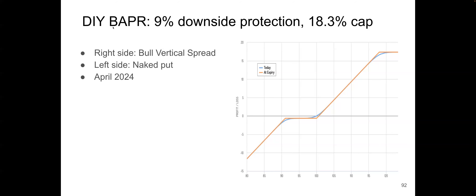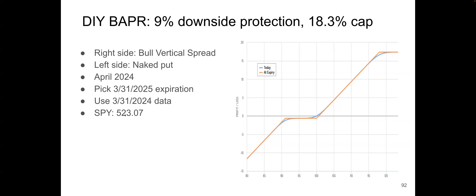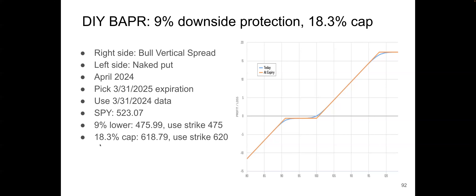This ETF called BAPR means April — so it's April 2024, and it will mature in a year, which is April 2025. Let's try to DIY and see what kind of price we can get. I will pick the closest expiration date, which is end of March, so a year from there is March 31st of this year. On that day, S&P 500 or SPY is $523.07. The 9% lower strike is very close to 475, and the higher strike, which is the cap at 18.3% higher, is $618.